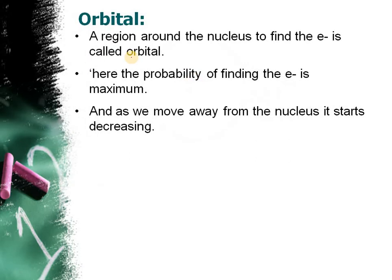Now, what is orbital? It is a region because when Bohr's postulate's limitations came, the concept of the orbit has failed. So there is a new concept of orbital. No doubt it exists, but it is not helpful for the actual position. What is orbital? It is a region around the nucleus to find the electron, which is called the orbital.